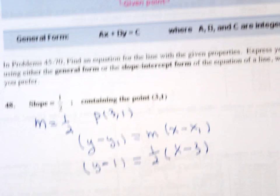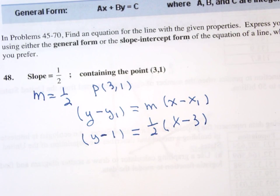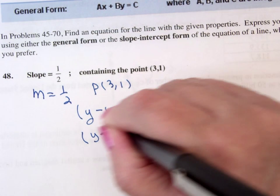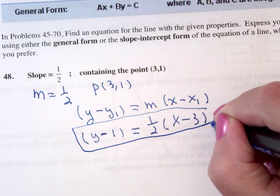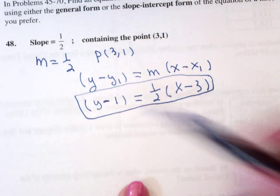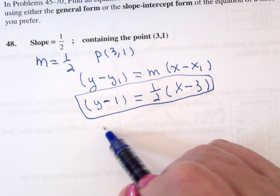Now personally, when I usually ask you to find the equation of the line, this answer is good enough, but that's not what your book wanted you to do. They said put it in slope-intercept form or in general form.